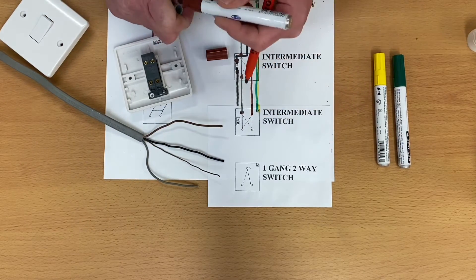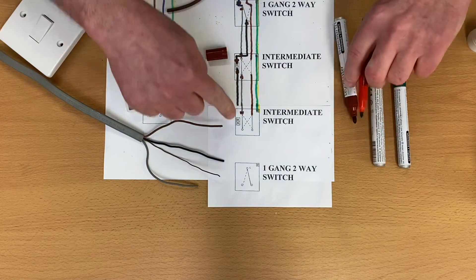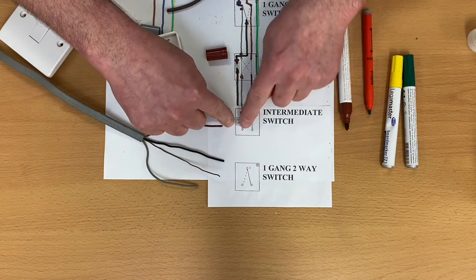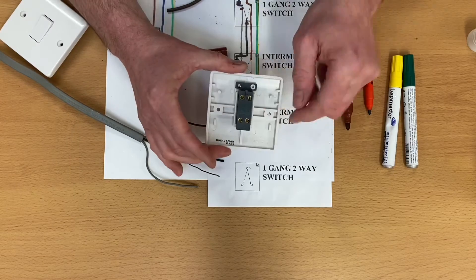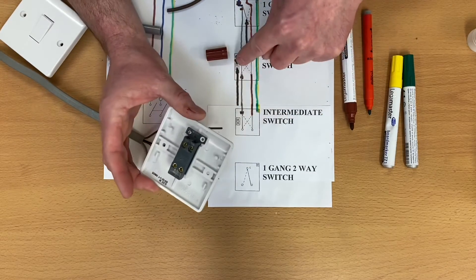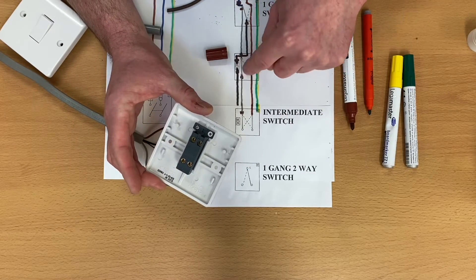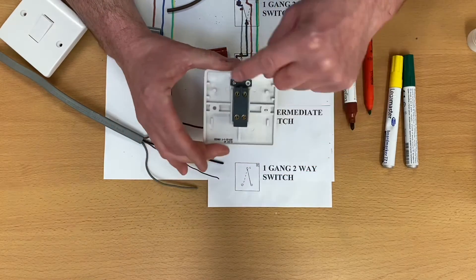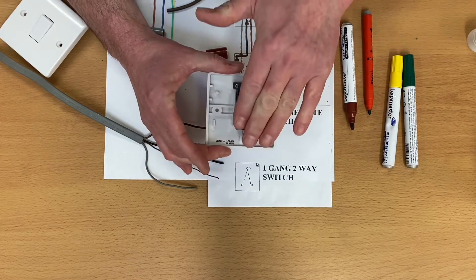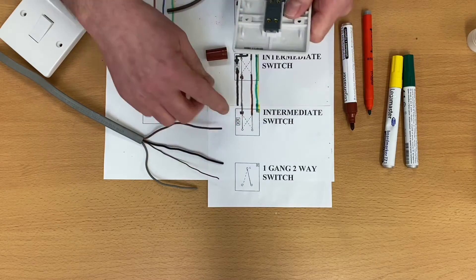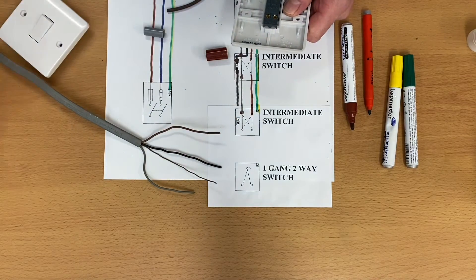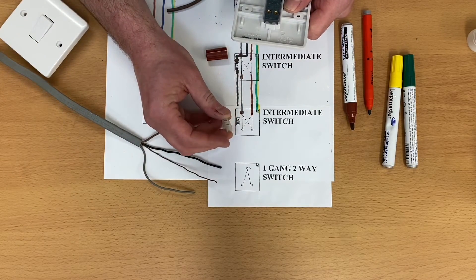So we'll introduce, well, it's probably still on the cable, isn't it? Our brown sleeving. And now we've got another connection, haven't we? Because we know an intermediate switch has our four connecting points. The black, which is our common in our two-way circuit. The common one comes and passes through our intermediate switch. It isn't connected in any of the terminals. It passes through.